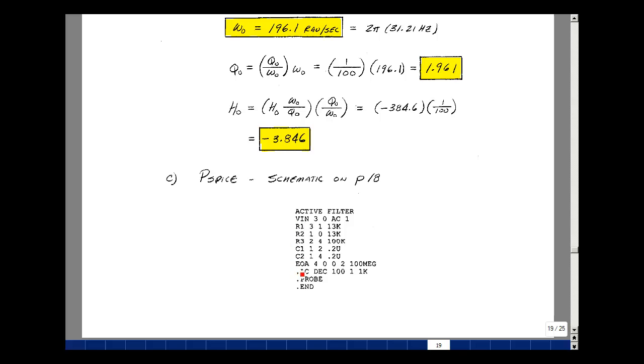My voltage controlled voltage source, which is how I'm going to model the op-amp. The op-amp's output is at node 4 to ground, plus terminal, minus terminal. And then we're sensing from the plus terminal, which is grounded, to the minus terminal, which is node 2. I'll give that a gain of 100 million, not infinity, but a pretty large value.